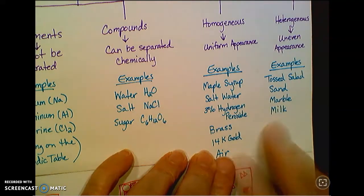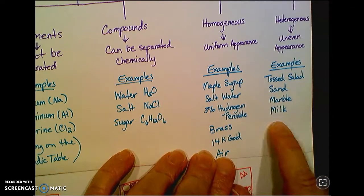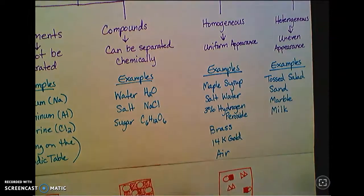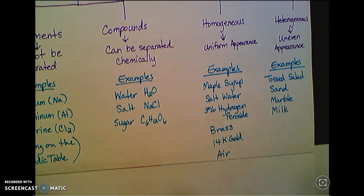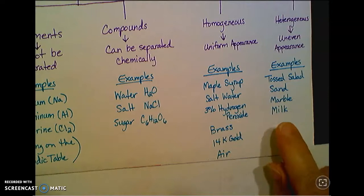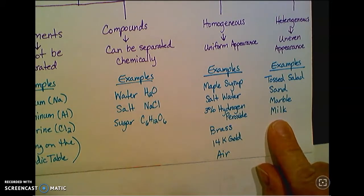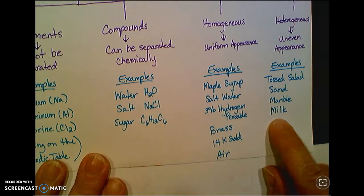This one's kind of tricky, so I wanted to throw it in there. Milk is actually a heterogeneous mixture. The reason I'm throwing that one in there is to explain what chemists think about when we talk about a heterogeneous mixture. If you look at the milk, you can't see different pieces or parts in there. But at the chemical or at the particle level, it is a mixture.